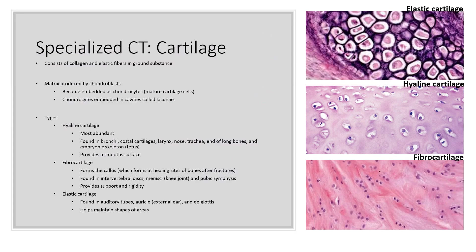Cartilage is the next specialized type of connective tissue. It consists primarily of collagen and elastic fibers and a ground substance. The matrix of cartilage is produced by chondroblasts. When they become embedded in the lacunae, they mature into chondrocytes, which are the mature cartilage cells. There are three types. Hyaline cartilage is the most abundant, found in the bronchi of the lungs, costal cartilages, the larynx, nose, trachea, ends of long bones, and the embryonic skeleton. It provides a smooth surface for articulations.